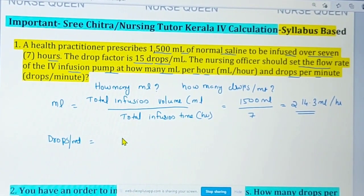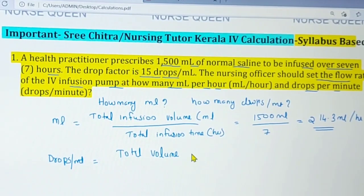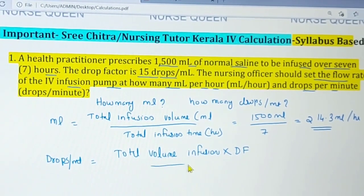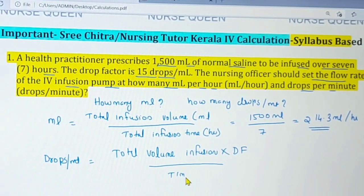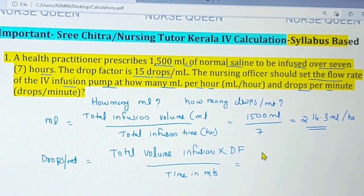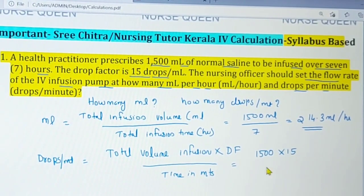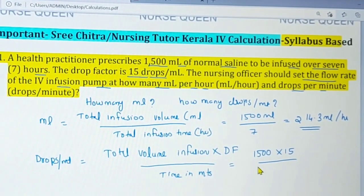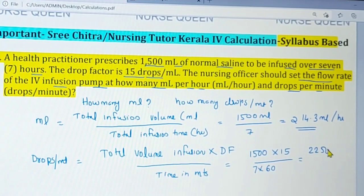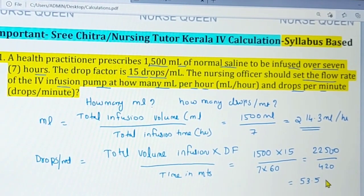Now for drops per minute: total volume multiplied by drop factor, divided by time in minutes. That is 1500 into 15 divided by time in minutes. The answer is 53.5 drops per minute.